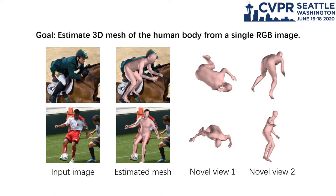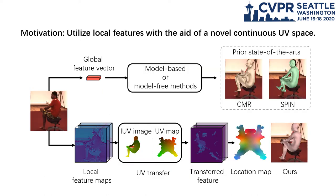This work aims to estimate 3D human mesh from a single RGB image. Prior methods estimate the full mesh using only global image feature vector. This motivates us to propose a framework to utilize local image features with the aid of a lower UV space.